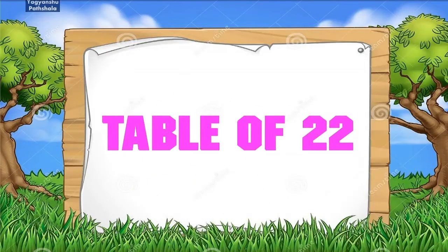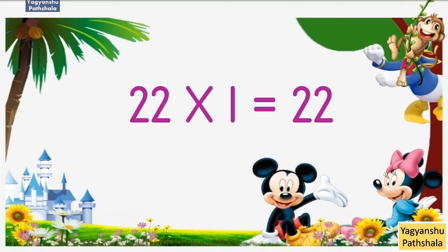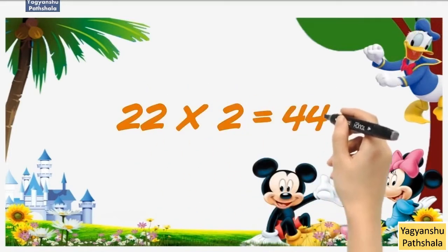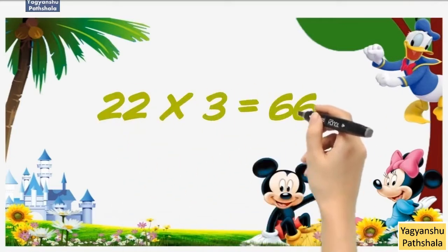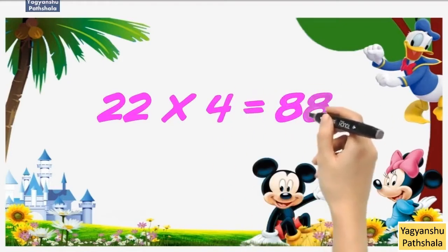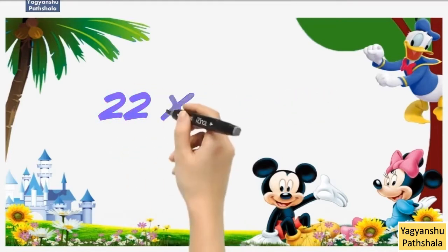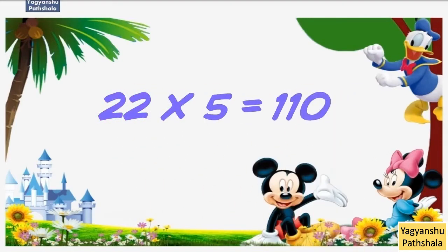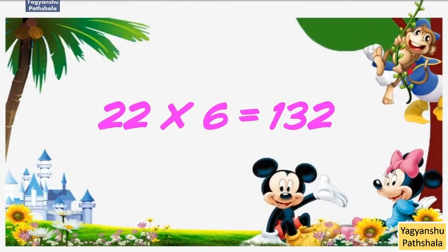Table of 22. 22 1 Jaa 22. 22 2 Jaa 44. 22 3 Jaa 66. 22 4 Jaa 88. 22 5 Jaa 110. 22 6 Jaa 132.